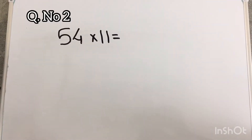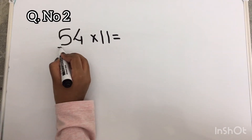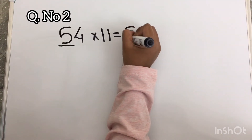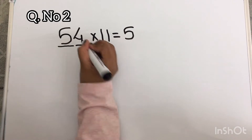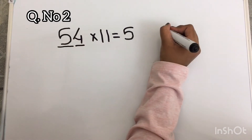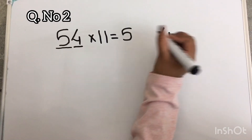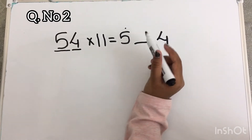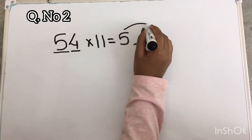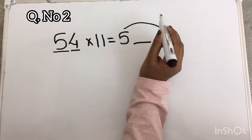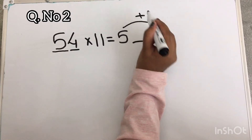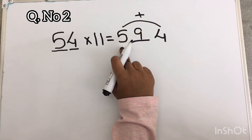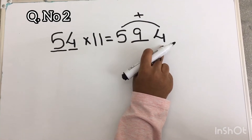Now I am going to write the tens digit 5 here and the units digit 4 here. For the middle number I am going to add both these numbers. So 5 plus 4 equals 9. So 594 is the answer.